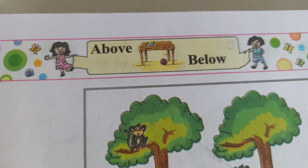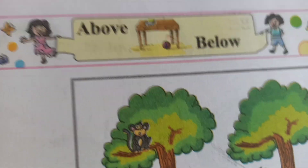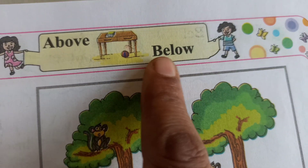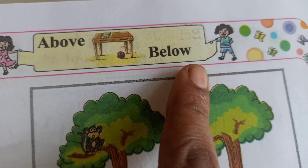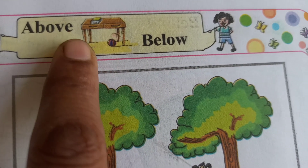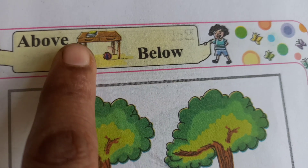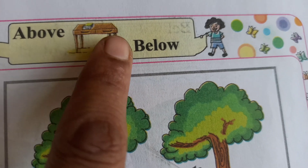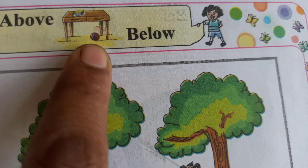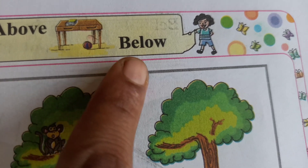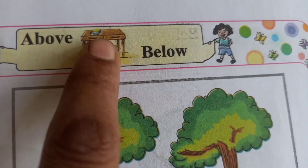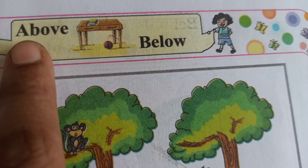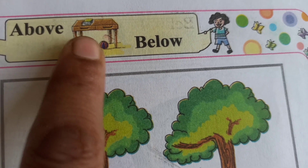Our heading is 'Above' — A-B-O-V-E, above — and 'Below' — B-E-L-O-W, below. Students, you can see here there is a table. On the table there is one thing, maybe a book. And under the table there is one ball — this ball is below the table. And this one book is above — A-B-O-V-E — above the table.